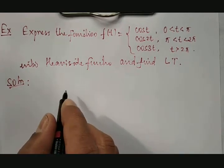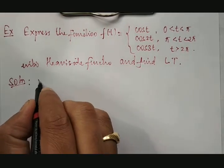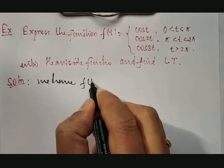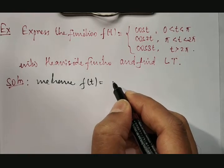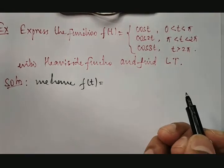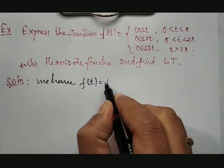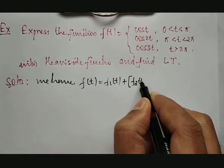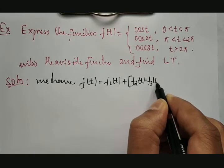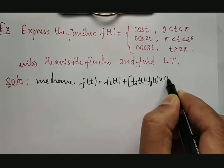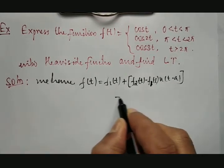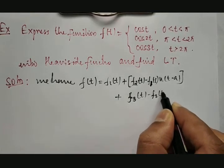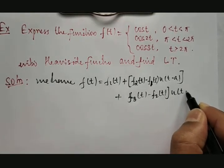In this regard, we have a property which will help us convert the given function into a unit step function or Heaviside function. It states: f(t) = f₁(t) + [f₂(t) − f₁(t)]·u(t − a) + [f₃(t) − f₂(t)]·u(t − b).